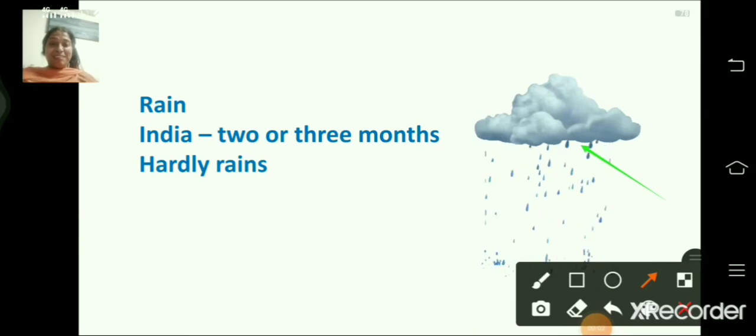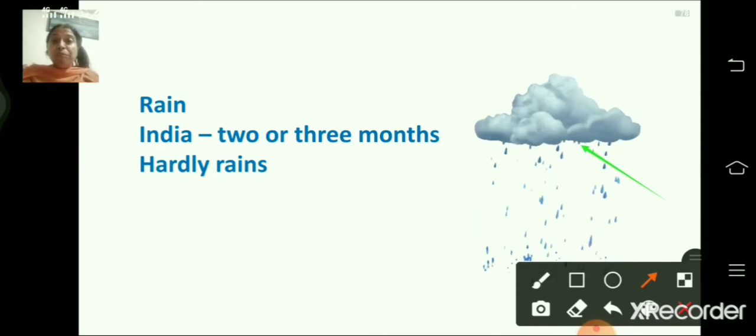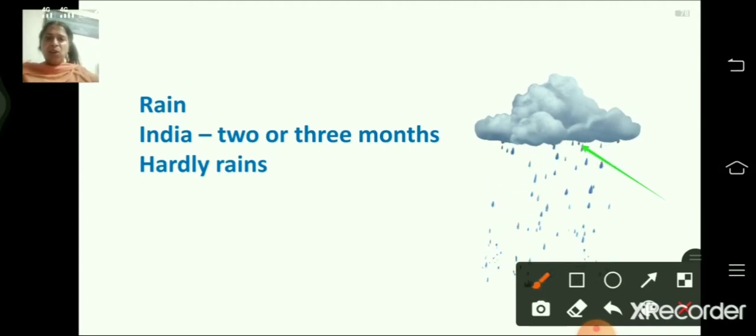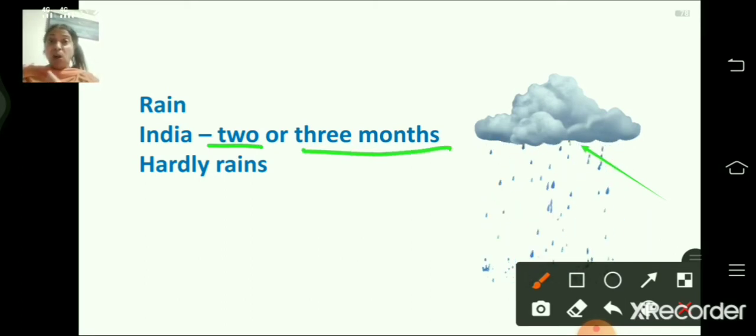Rain. So children, you all like rainy season, isn't it? You like to play and you also sail paper boats. So rain is our main source of water. That is, our main source of fresh water is rain. However, in India, it rains only for 2 or 3 months. In some places it doesn't rain and in several places it hardly rains.